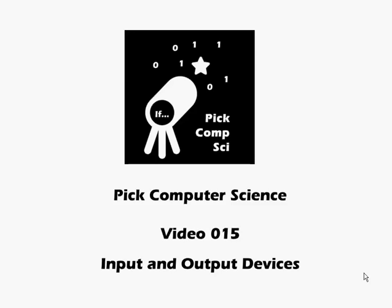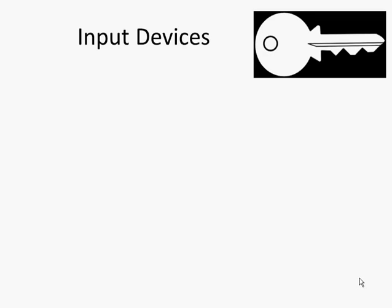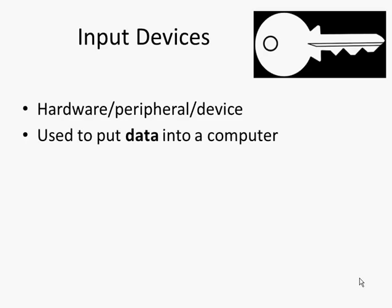Pick computer science video number 15, where we look at input and output devices. Input devices are hardware or peripherals or devices that are used to put data into a computer. Data is a key term there, and we'll talk about exactly what that means and why it's important here in a short while.